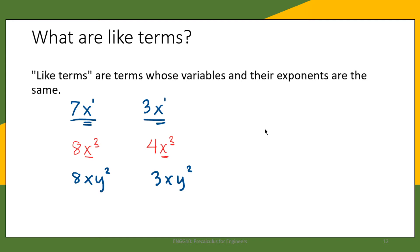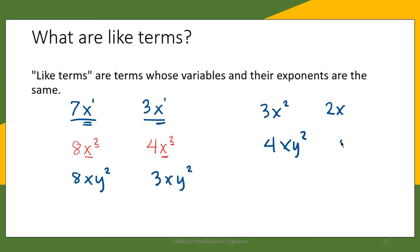Examples of unlike terms: 3x squared and 2x are unlike terms because the first one has an exponent of 2 while the second one has an exponent of 1. Another pair of unlike terms are 4xy squared and 3x squared y. We cannot combine them because they are unlike terms.